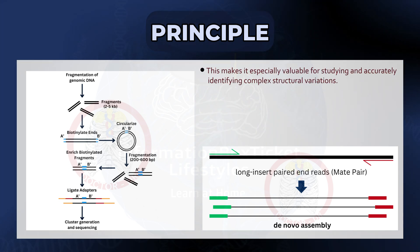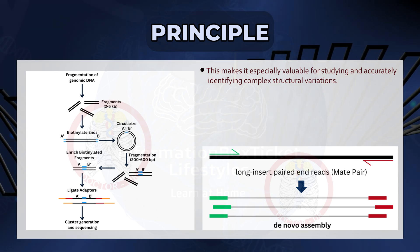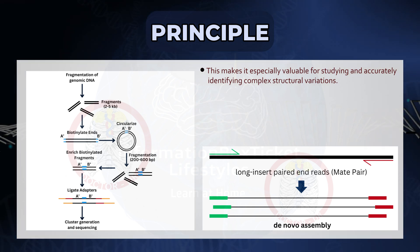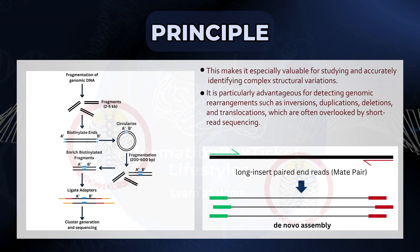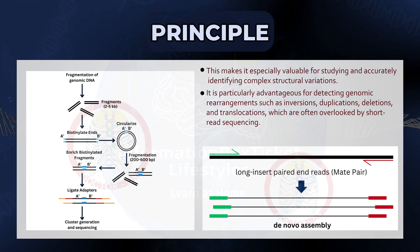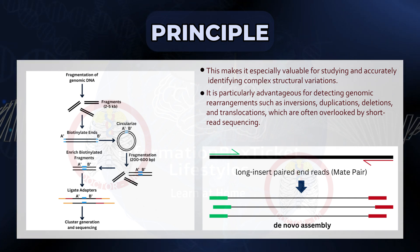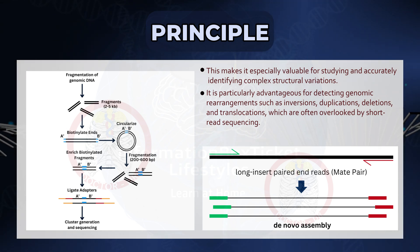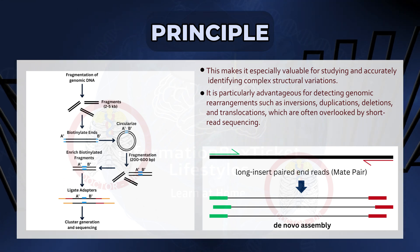This makes it especially valuable for studying and accurately identifying complex structural variations. It is particularly advantageous for detecting genomic rearrangements such as inversions, duplications, deletions, and translocations, which are often overlooked by short-read sequencing.